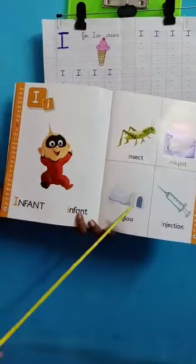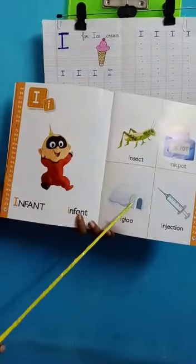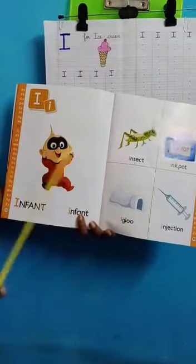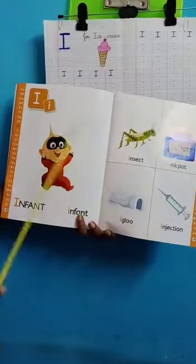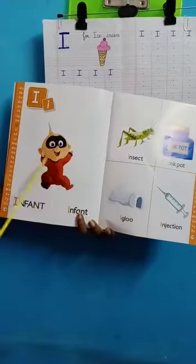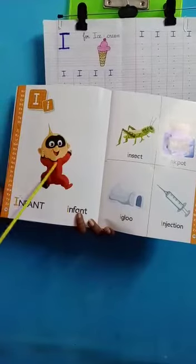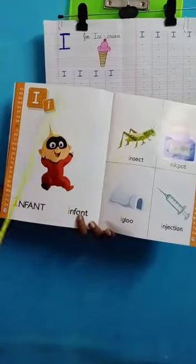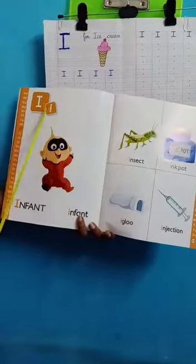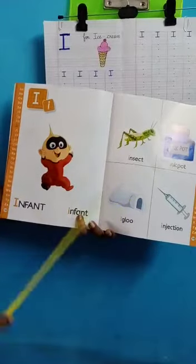I for injection. I for injection. Once more we repeat. I for infant, I for insect, I for ink pot, I for igloo, I for injection.